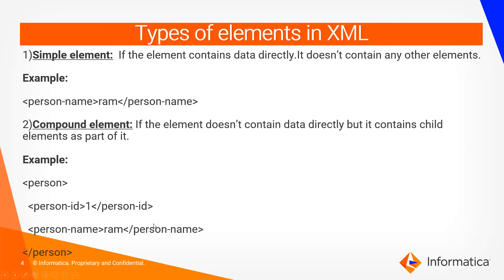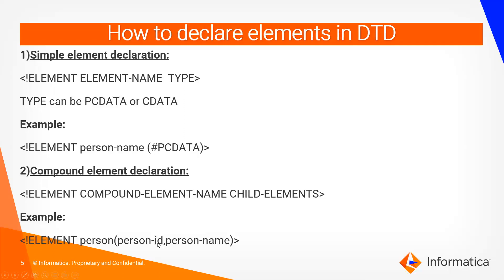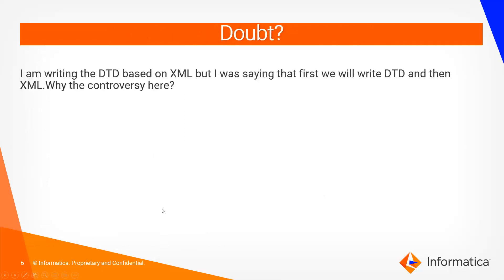For example, 'person' is a compound element, so person-id and person-name are its child elements — they are put in brackets separated by a comma. You may have a doubt: as I mentioned, I am a car manufacturer, shop owners give me the XML file and I validate it based on my DTD file. That means I write the DTD file first and then shopkeepers write their XML file based on the DTD and give it to me.